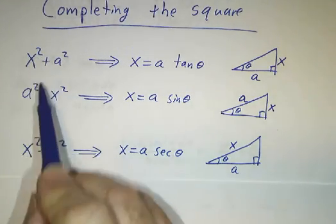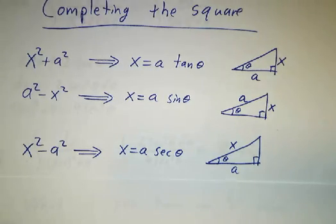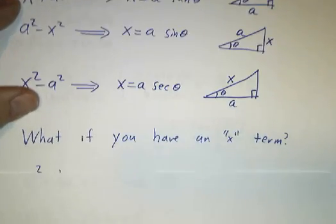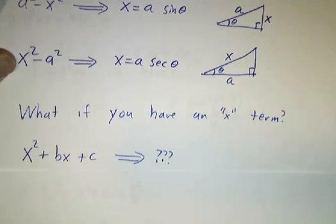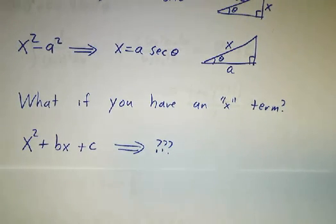But one thing that all these expressions have in common is that they don't have an x term in there. What if there is a coefficient of x? Like what if somebody gave you x squared plus bx plus c? What do you do then?